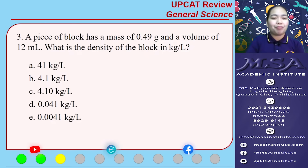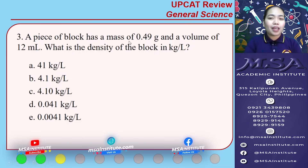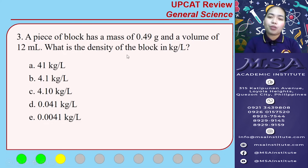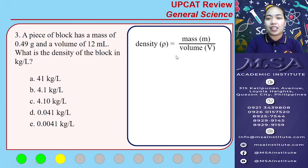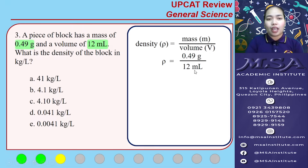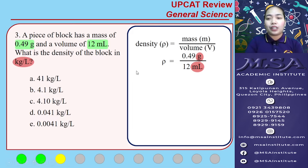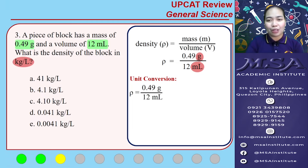Number three: a piece of black has a mass of 0.49 grams and a volume of 12 milliliters. What is the density of the block in kilograms per liter? Density is the amount of mass per unit of volume, so we divide 0.49 grams by 12 milliliters. We are asked for the density in kilograms per liter, so we will convert grams into kilograms and milliliters into liters.